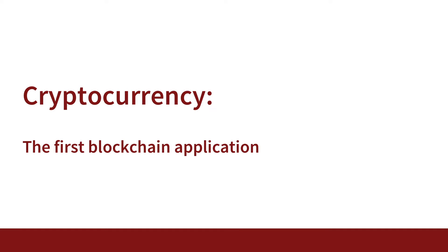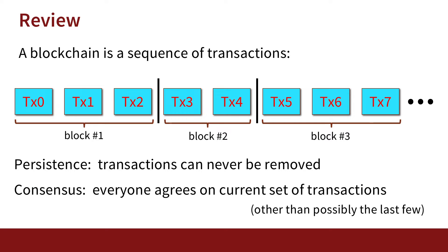Welcome back everyone. Now that we understand the basics of what a blockchain is, let's see how to use it for its first application — building a cryptocurrency. A quick review: a blockchain is basically a sequence of transactions, one followed by another all the way from the beginning of time. These transactions are partitioned into blocks, where each block is published as a whole onto the blockchain, publishing all the transactions in that block.